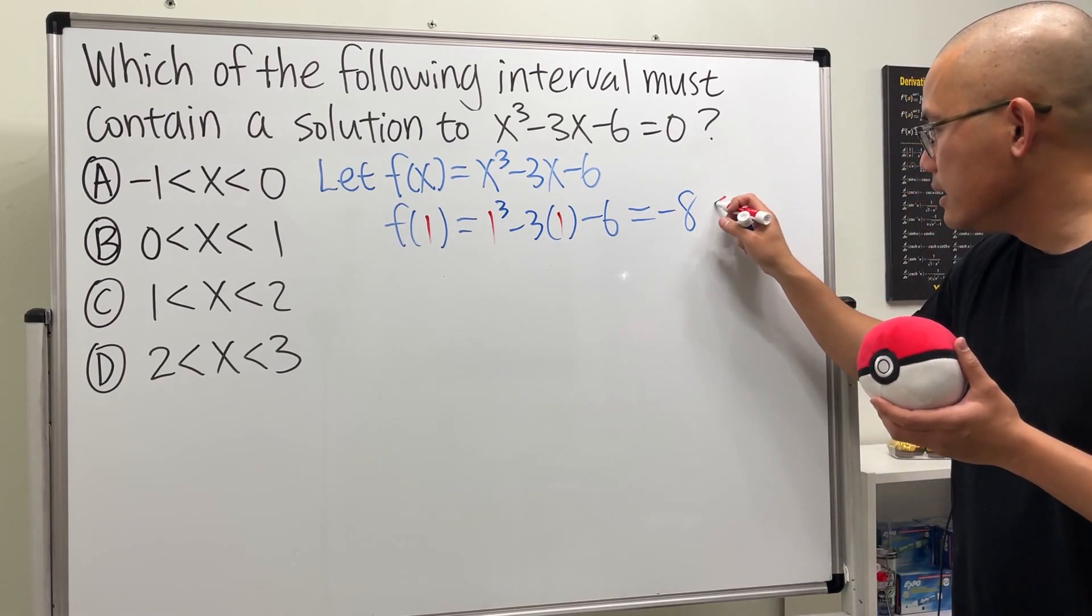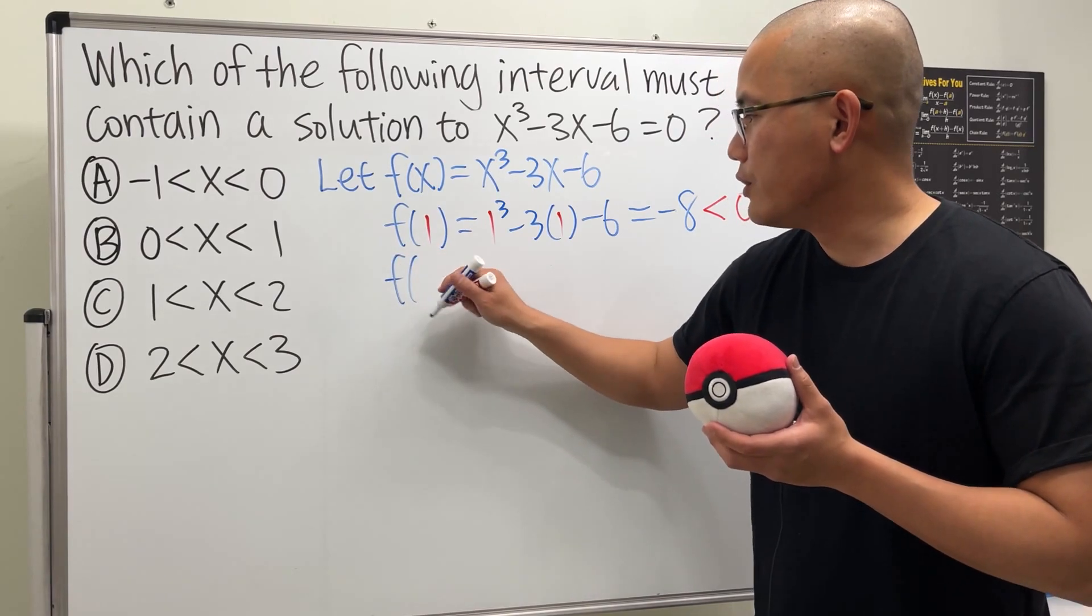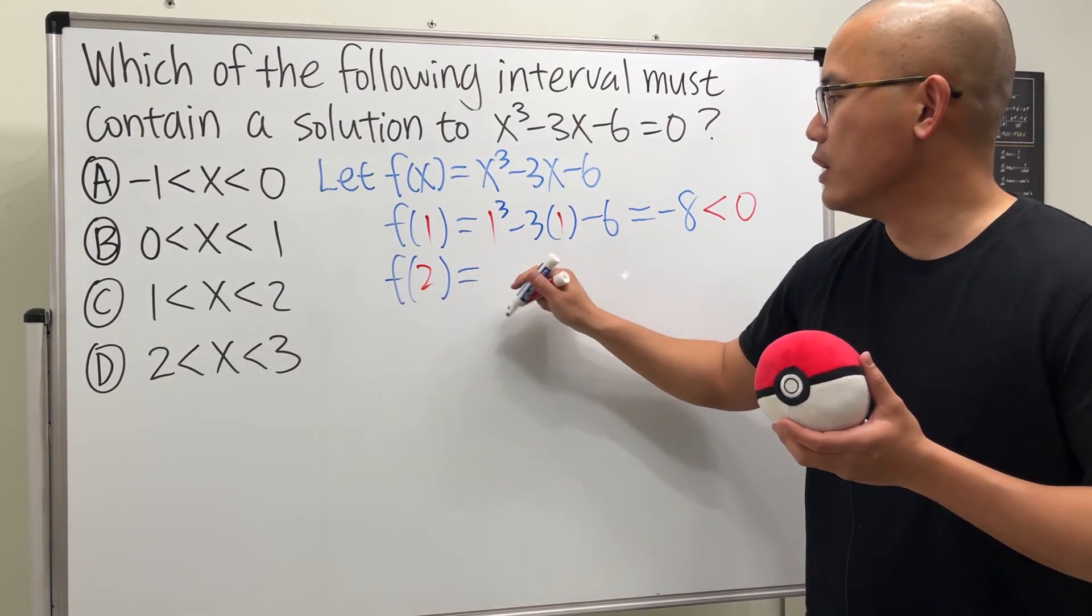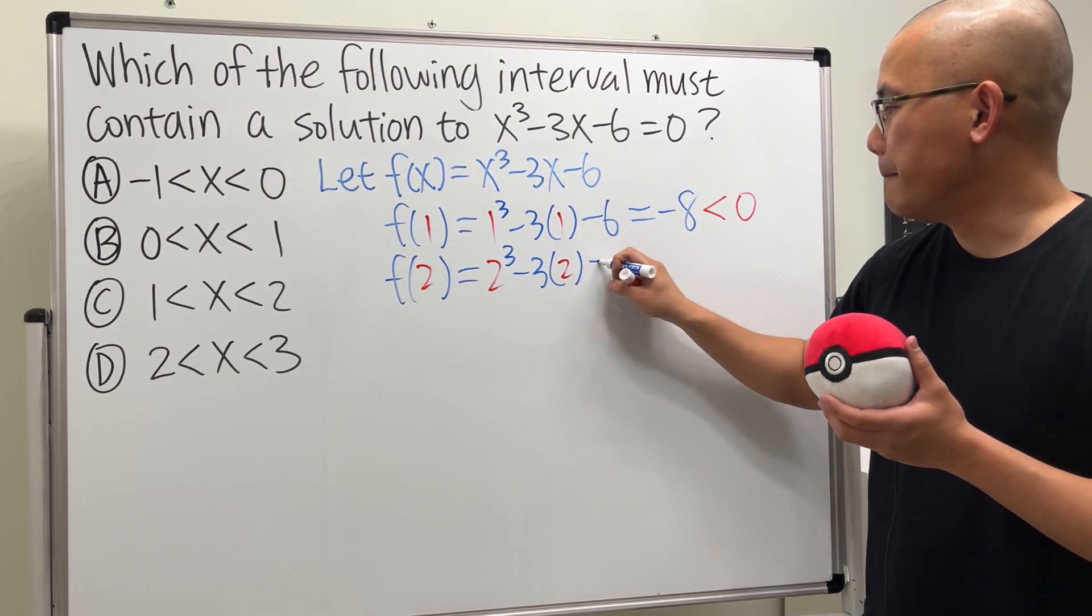Keep this in mind. This is negative. Next, we test out this number, which is 2. So f(2). This is equal to 2 to the third power minus 3 times 2 and then minus 6.